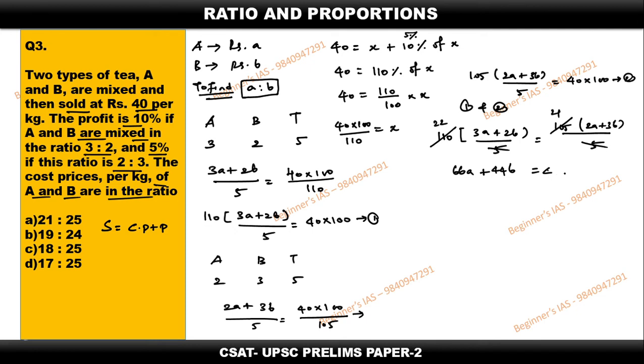So this is nothing but 42a. Then 3 into 21, so this is nothing but 63b. We need to identify a by b. Therefore simplify. Bring this towards LHS, bring this towards RHS.